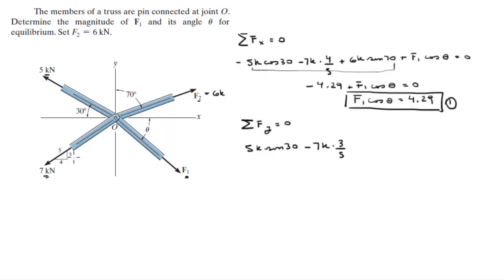The y component of this F2 is positive F2 cosine of 70, and the y component of F1 is negative F1 sine of theta, and all that is equal to zero.